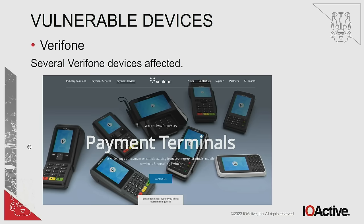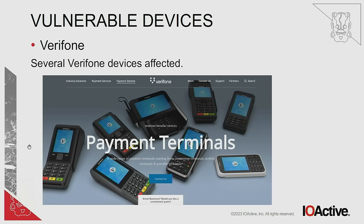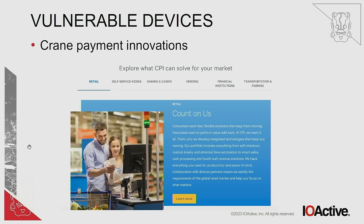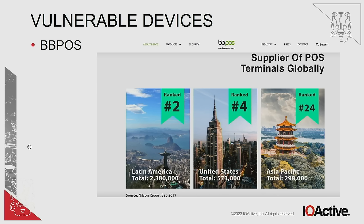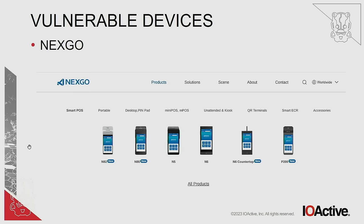Several Verifone devices were also affected. My approach was: once I found a device was crashing, I would try to obtain one, get debug capabilities or log access to determine whether it was a stack or heap buffer overflow, and then contact the vendor. Crane Payment Innovations also had several affected devices. BBPost — a very large company with readers everywhere — had several affected devices. WEETCO, a Chinese company with devices deployed globally, had several affected devices. NextGo, another Chinese vendor with worldwide presence, was also affected.